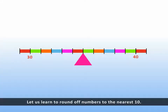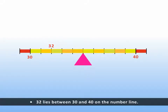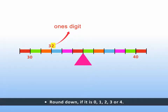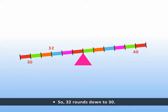Let us learn to round off numbers to the nearest ten. Let us round off thirty-two to the nearest ten. Thirty-two lies between thirty and forty on the number line. Check the ones digit. Round up if it is five, six, seven, eight or nine. So thirty-two rounds down to thirty.